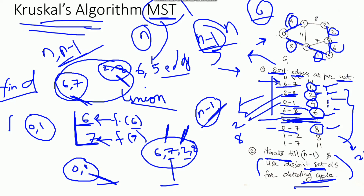To summarize the algorithm: first, sort the edges in increasing order of their weight. Then iterate until n minus 1, because in a spanning tree with n vertices there are n minus 1 edges. After that, use disjoint set data structure operations — find and union. We can use simple find and union, or optimize with union by rank or path compression. The disjoint set data structure is used for detecting cycles and for implementing Kruskal's algorithm.